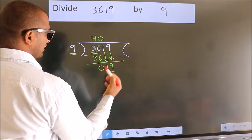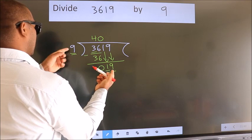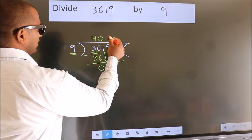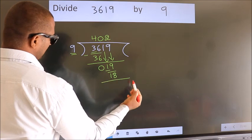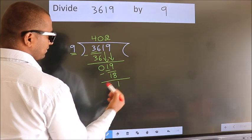So, 19. A number close to 19 in 9 table is 9 twos 18. Now, we subtract. We get 1.